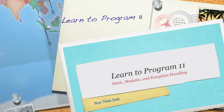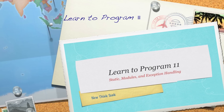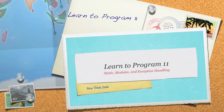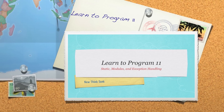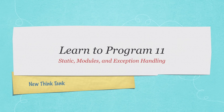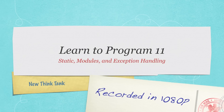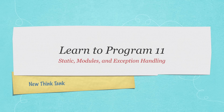Welcome to part 11 of the learn to program series. In this part we'll cover static methods, static variables, how to make your own modules, and we'll get deeply into exception handling. Please watch the previous parts of the tutorial — a link to the playlist is on screen. In the description you'll find all the code, heavily commented, as well as a transcript of the video.